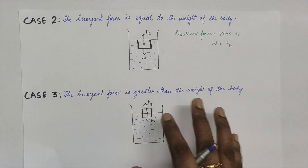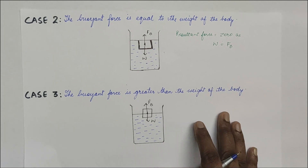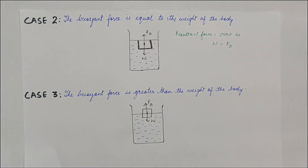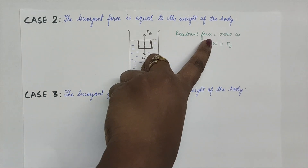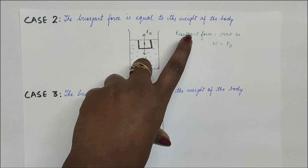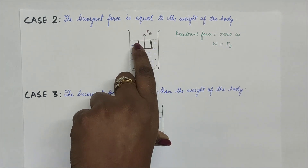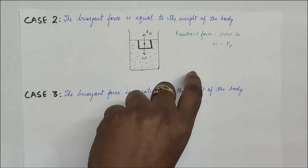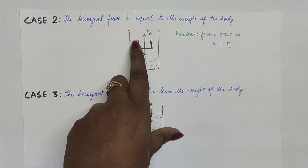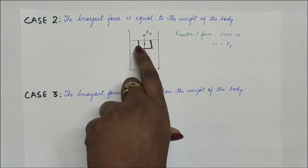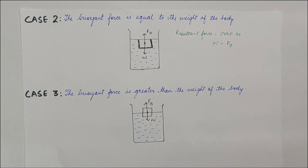Case 2: When the buoyant force is equal to the weight of the body. The body floats just at the surface of the liquid. The resultant force becomes zero because the body and the liquid have the same density — it is not going completely in, nor coming out. It is just at the floating point, right at the surface.